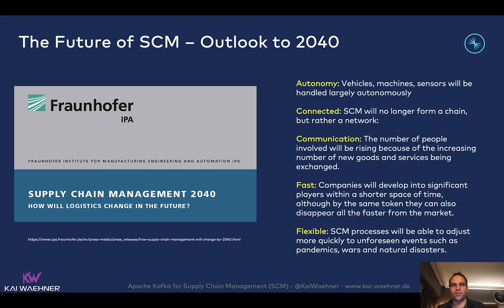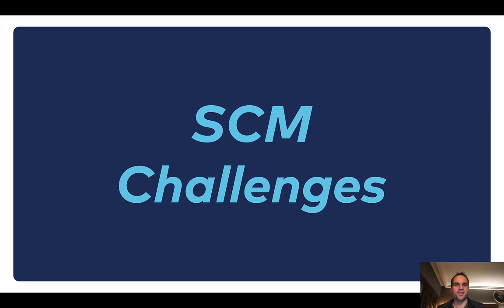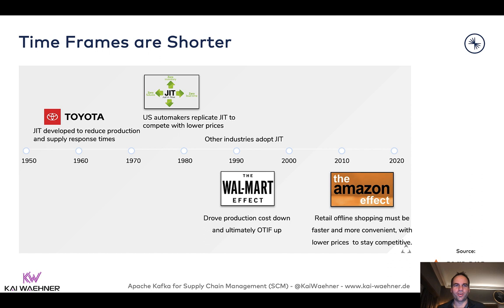This brings us to the challenges of supply chain management. The timeframes are shorter. Many years ago we started with just-in-time development — the famous Toyota use case — and then this was adopted across the world. Then new effects came into play, like the Walmart effect and the Amazon effect. In general, as I said, it's more automated, more connected, more real-time, more flexible.